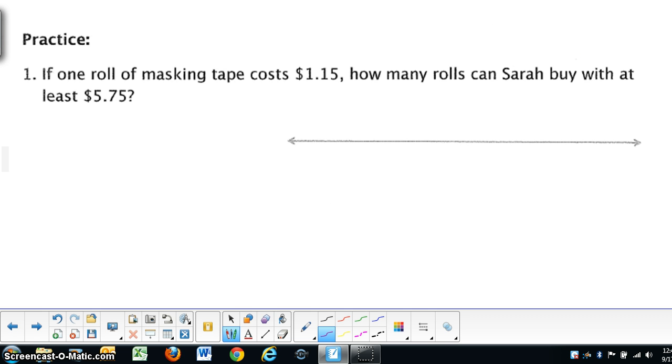One roll of masking tape costs $1.15, and how many rolls can she buy at least? When you receive that keyword, that's going to be less than or equal to, and since we do not know how many rolls, that's going to be what our variable is going to represent. The rolls of masking tape. Okay, so let's read the sentence one more time. If a roll of masking tape costs $1.15 per roll,